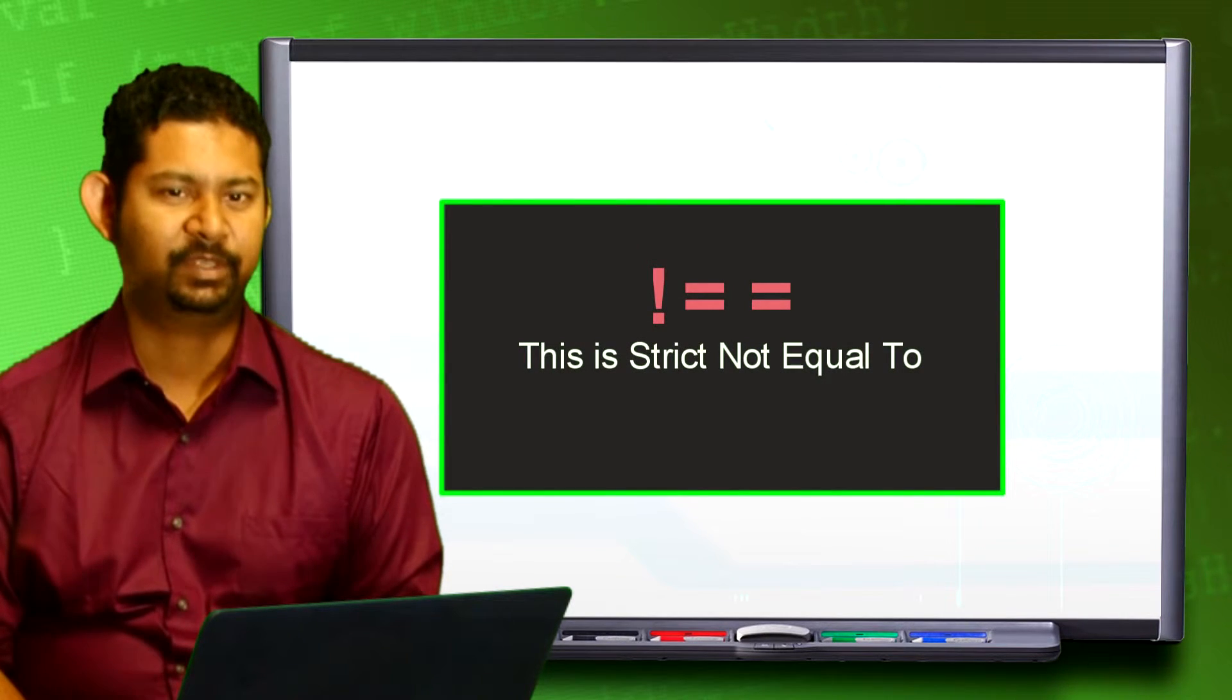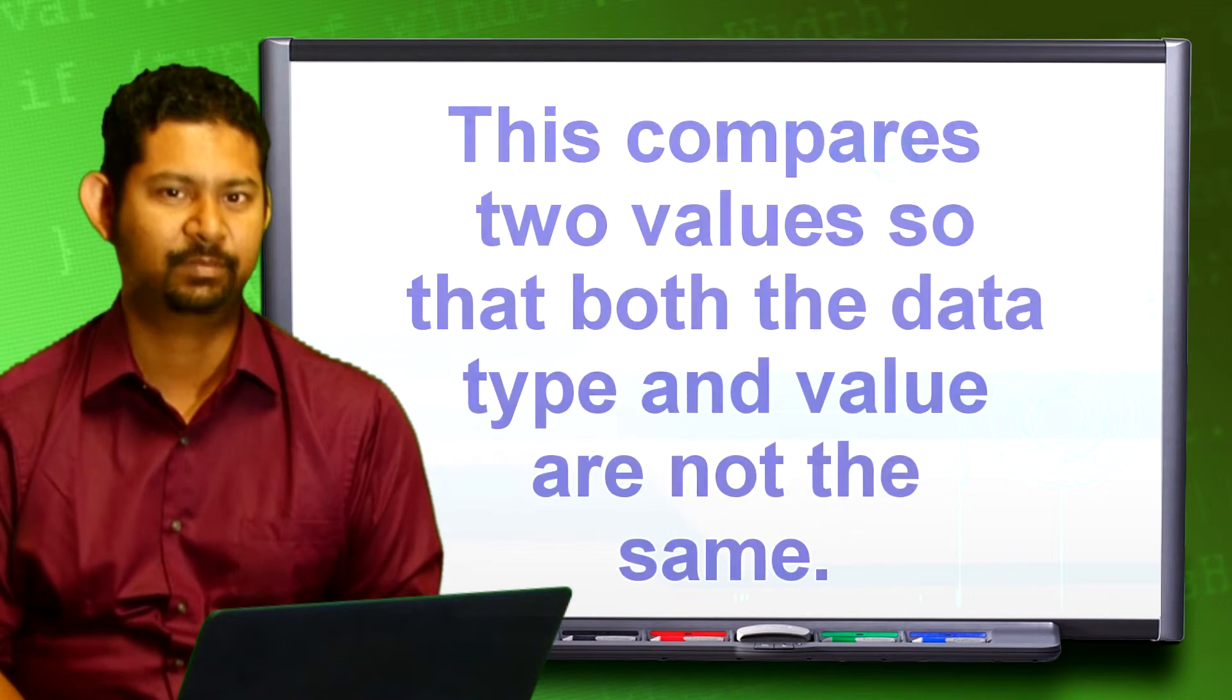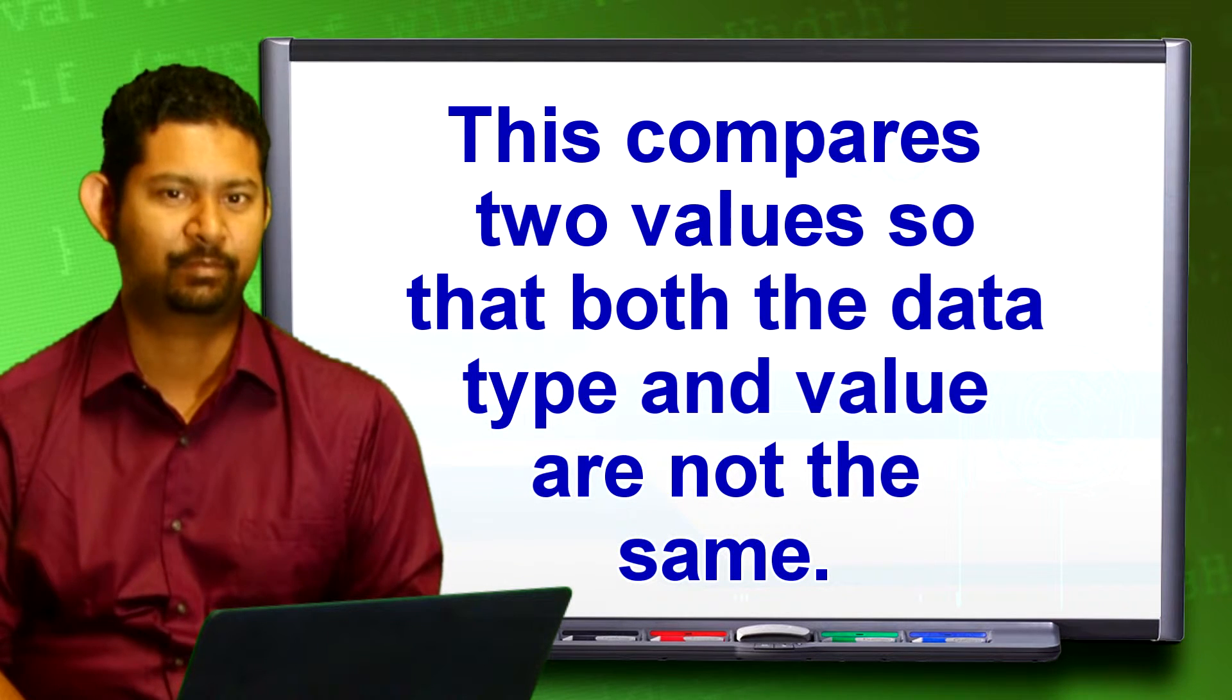Exclamation point double equal sign. This is strict, not equal to. This compares two values so that both the data type and value are not the same.